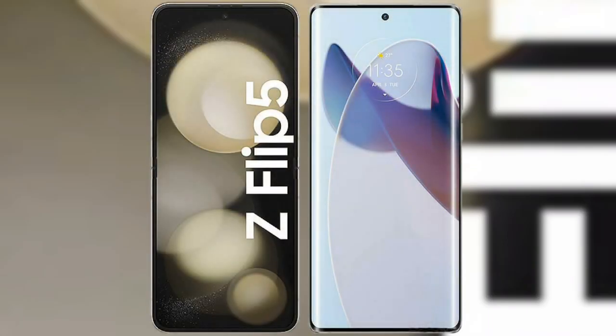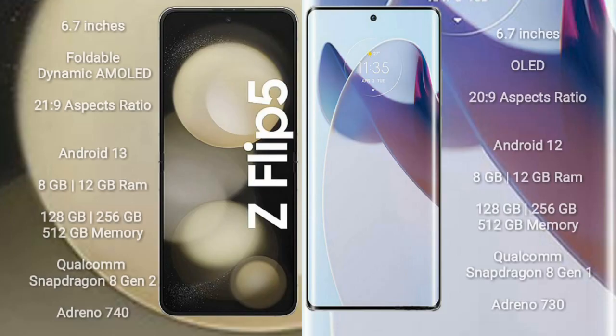I will compare the new Samsung Galaxy Z Flip 5 with Motorola Moto X30 Pro. Samsung Galaxy Z Flip 5 comes with a 6.7-inch foldable dynamic AMOLED display and aspect ratio 21:9. Motorola Moto X30 Pro comes with a 6.7-inch OLED display and aspect ratio 21:9.